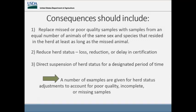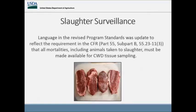Diagnostic labs will need to communicate sample issues to their state CWD program manager as soon as it is apparent. Regarding slaughter surveillance, the CFR is clear that mortalities, including animals taken to slaughter, must be made available for CWD tissue sampling. The revised program standards were updated to reflect the CFR — if an animal remains with the same herd owner that's a member of our participating program, it needs to be tested.